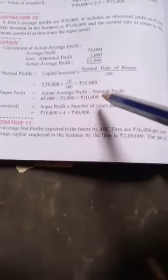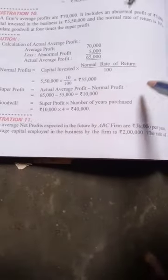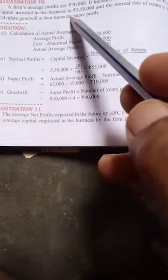Actual profit, actual average profit minus normal profit is equal to 10,000. Then we have to calculate the goodwill. Super profit is equal to number of years purchase, 4 years. 4 times, 4 times 4, times 5 times of the super profit. Then we have to multiply and got the goodwill.